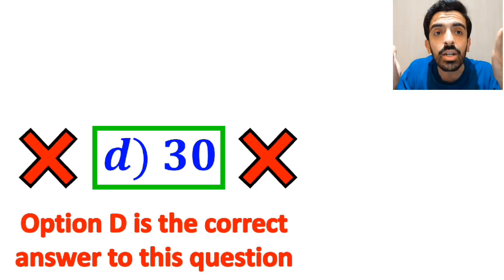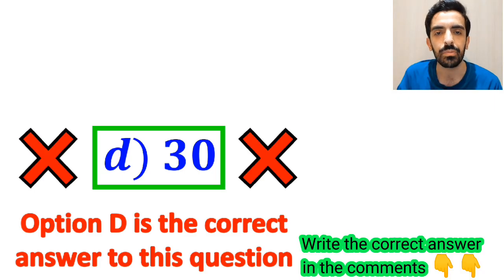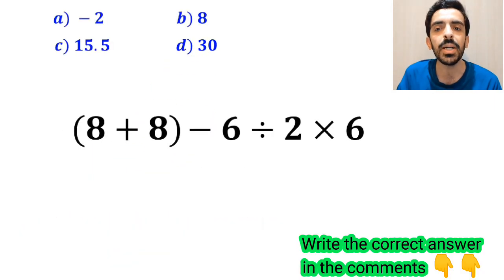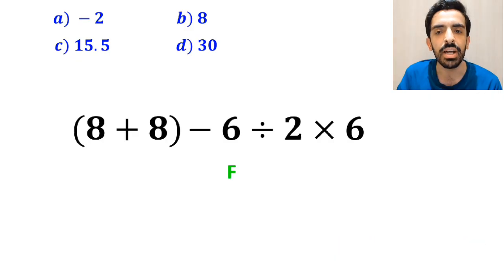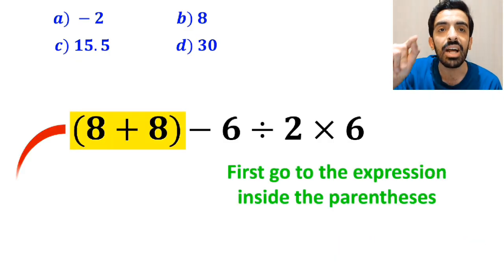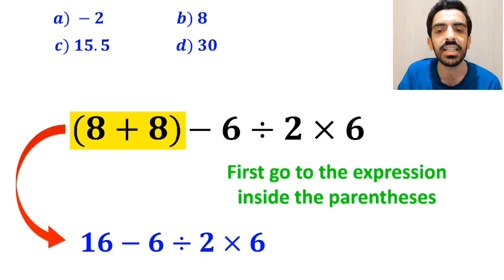However, it's not the correct answer to this question. Also, some other people, when solving this question, first go to the expression inside the parenthesis and rewrite this expression as 16 minus 6 divided by 2 then times 6.